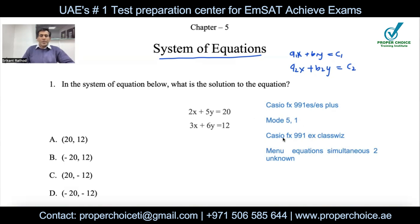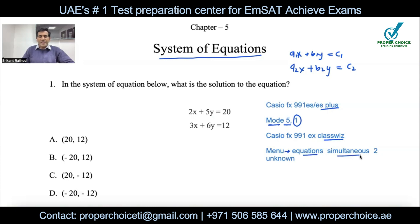When it comes to finding the solution to a system of equations, straightforwardly use a calculator. If you have a Casio fx-991 ES or ES Plus, press Mode then 5 and 1 for two variables, or Mode 5 and 2 for three variables. For the Casio fx-991 EX ClassWiz, press Menu, then Equation, then choose simultaneous with two unknowns.